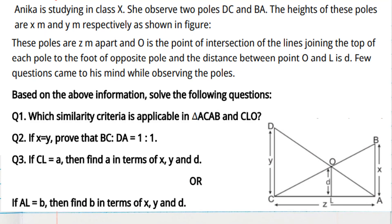Hello students. This is one of the most important case studies from the chapter on triangles. It says that Anika is studying in class 10. She observes two poles DC and BA, as you can observe in the diagram. Heights of the poles are also given: X meters and Y meters as shown in the figure. These poles are Z meters apart, so the length AC is Z meters.